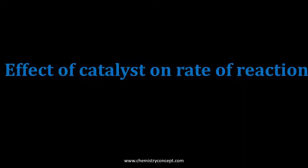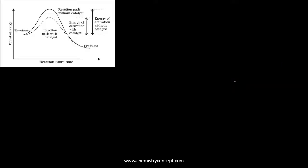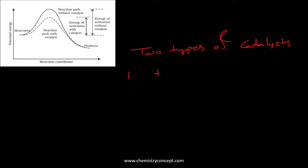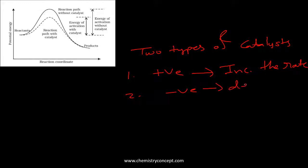Hello everybody, today we will be discussing the effect of the catalyst on the rate of reaction. Generally, there are two types of catalyst: one is positive catalyst and another is negative catalyst. Positive catalyst increases the rate of reaction, and negative catalyst decreases the rate of reaction.